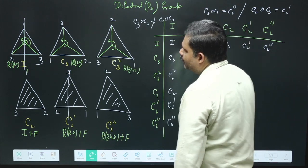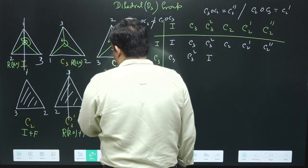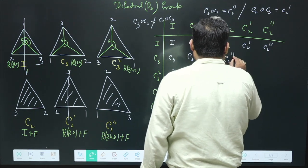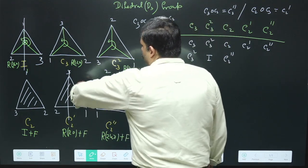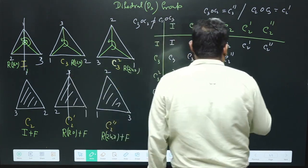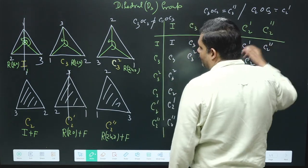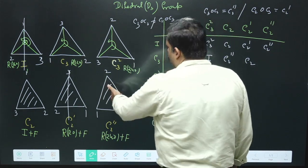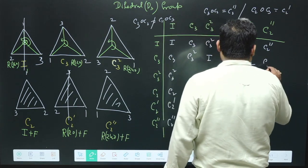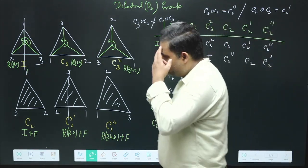C2'' composed with C3 (rotating the C2'' configuration by 120 degrees) gives C2. C2' composed with C3² (rotating 240 degrees, i.e., two applications of 120 degrees) gives C2''. All possible elements appear in each row, which is required for a valid group Cayley table.